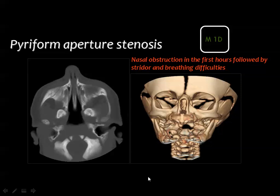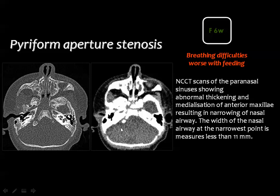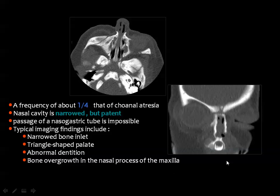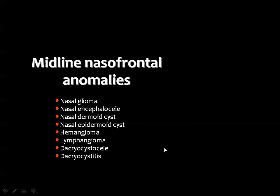Multi-detector CT with 3D imaging reconstruction can nicely demonstrate the nasal aperture, provide measurements, and assess the thickness of the nasal processes of the maxilla. An example shows severe stenosis of the nasal aperture with median bowing of the nasal processes. In the coronal planes, you can evaluate associations including narrowing of the bony inlet, triangular-shaped palate, and abnormal dentition.